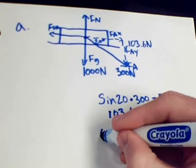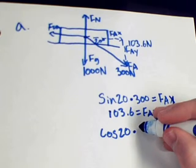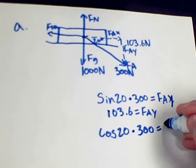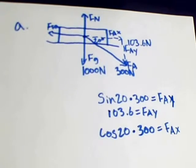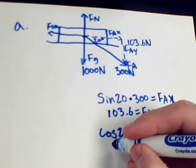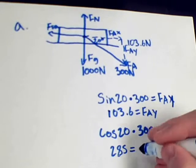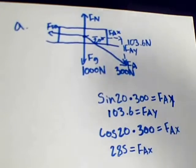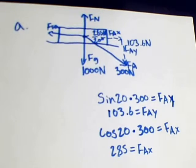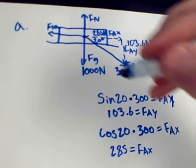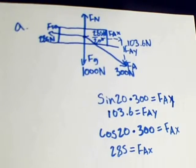What we can do to find the force applied in the x direction is take the cosine of 20 degrees times 300 newtons. If we do this correctly, we should come out with 285 newtons. Afterwards, we put that as the force of friction for part A.